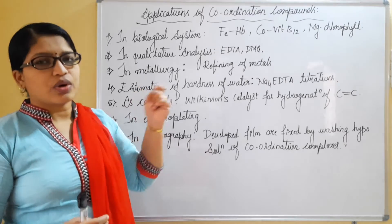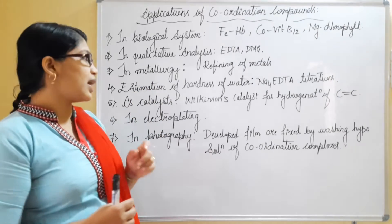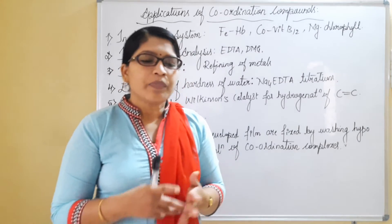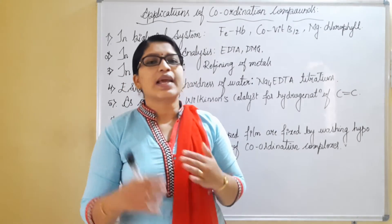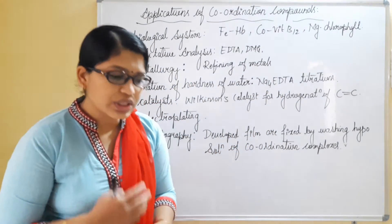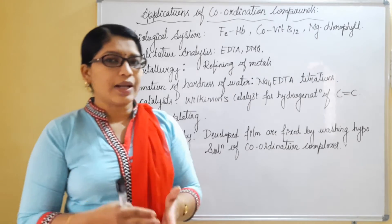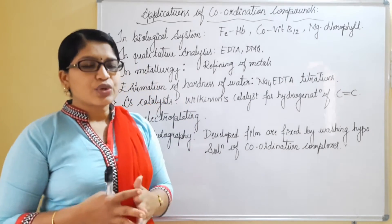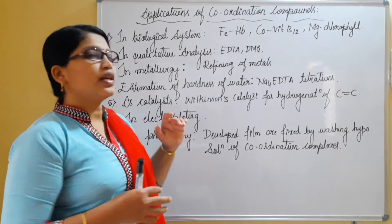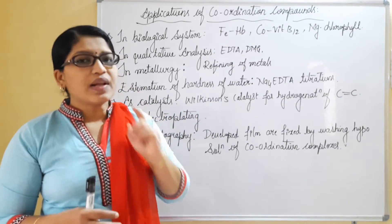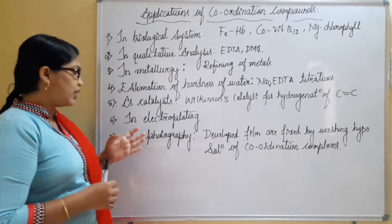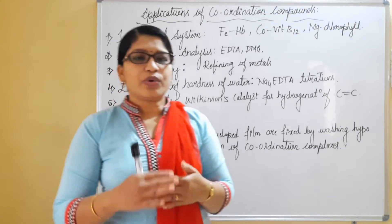Fifth, coordination complexes can be used as a catalyst. Wilkinson's catalyst, which we study in organic chemistry, is used for the hydrogenation of alkenes — that is, adding an H₂ molecule to particular alkenes. Wilkinson's catalyst is mainly made of coordination complexes.